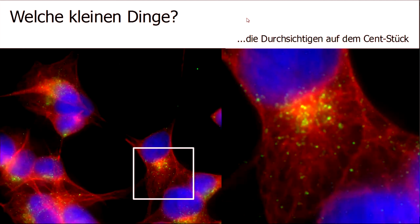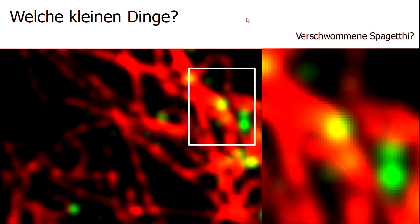If you zoom in on one of these cells, on the left-hand side you see the whole picture, and on the right-hand side it's just part of the cell. There you see there are a lot of things in there. And if you zoom in even more, you want to see really the internal structures of the cell — and then you can see it gets blurry. It looks like blurred spaghetti.